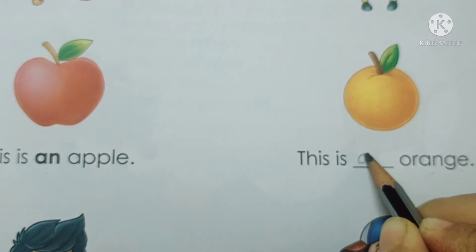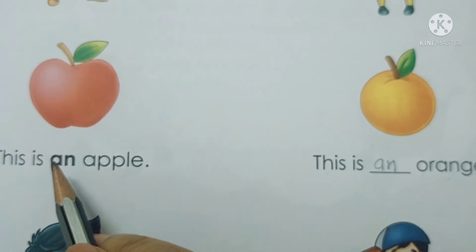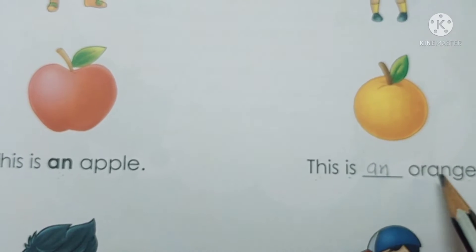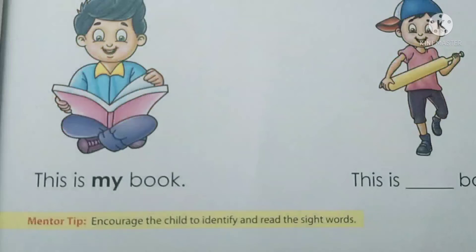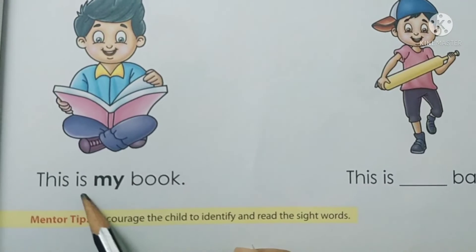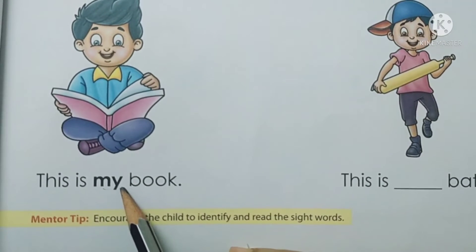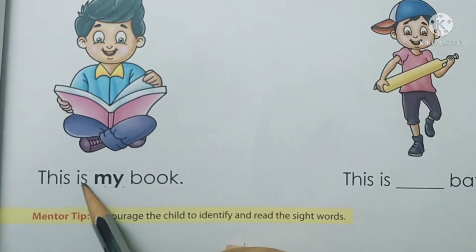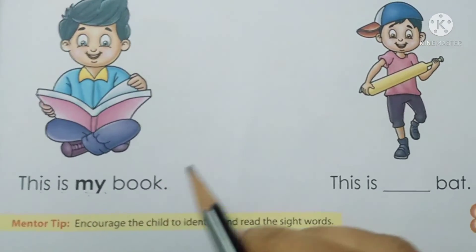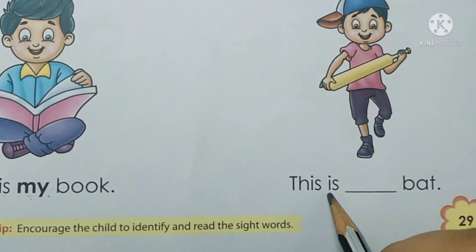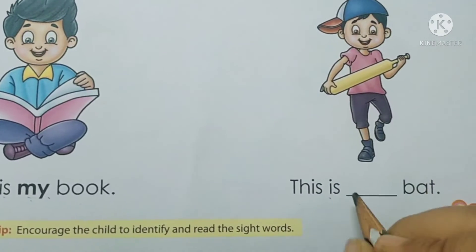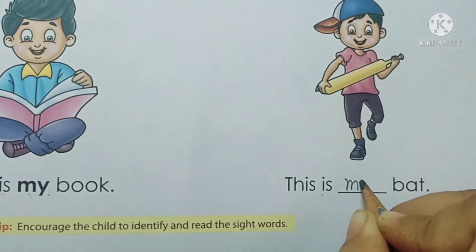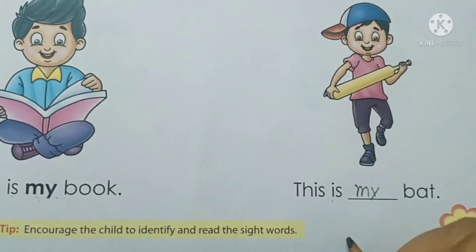An — this is an orange. Now next is 'my' — M-Y — my. This is my book. This is my bed.